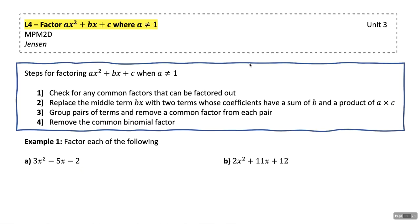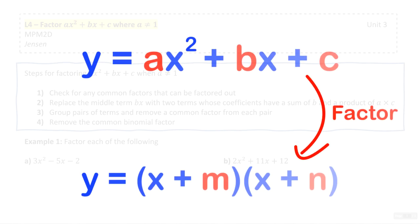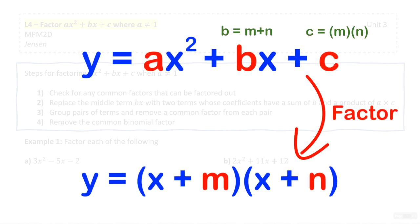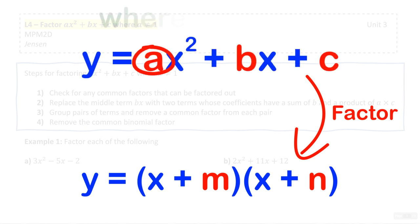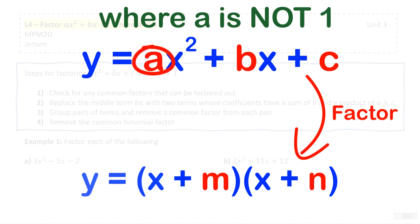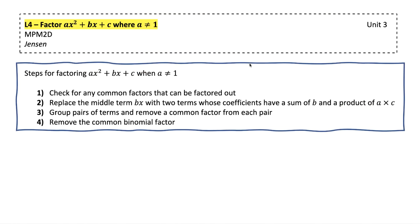This is the fourth lesson in the factoring unit. In the previous lesson you learned how to factor quadratics in the format x² + bx + c where the leading coefficient was one. In this lesson you're going to learn how to factor quadratics in the format ax² + bx + c where the leading coefficient a is not one and can't be common factored out.